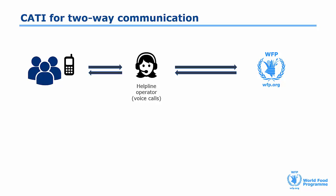Operators log all questions, feedback, and complaints in a customer relationship management software. This software facilitates the follow-up process. It helps to compile the caller's information and automates various workflow processes such as sending questions or feedback to relevant colleagues. Easy, standard questions can be answered by operators during the call.